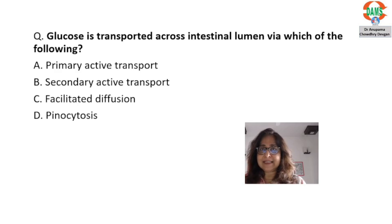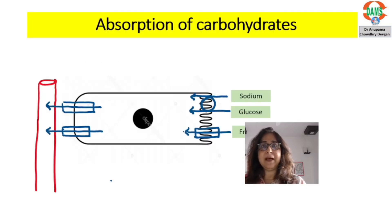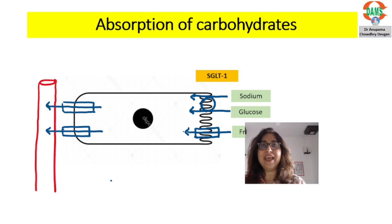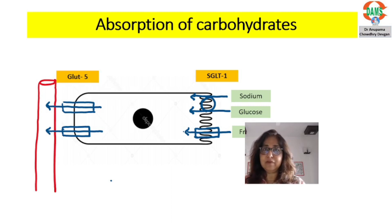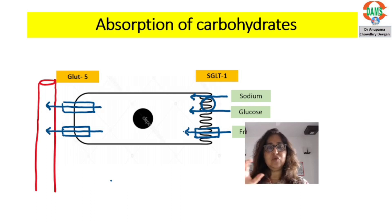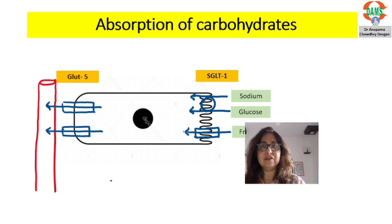So let's see how glucose is absorbed by the enterocyte. The movement of glucose from the lumen into the enterocyte is with the help of SGLT1 — sodium glucose linked transporter 1 — which is an example of secondary active co-transport. Glucose leaves the basal side of the cell with the help of GLUT5, which is an example of facilitated diffusion. So both secondary active co-transport as well as facilitated diffusion are involved in the absorption of glucose.